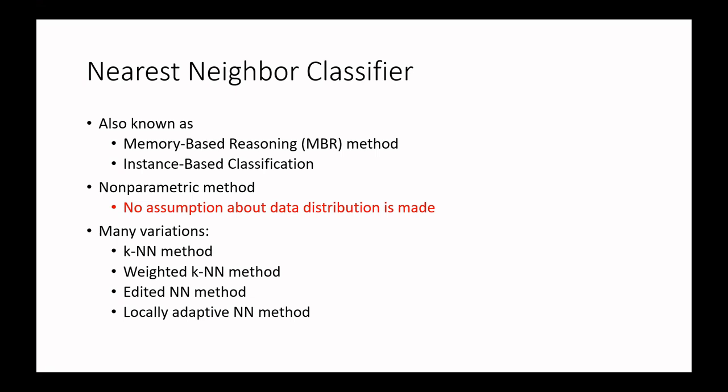There are many variations of this method. In general, it is called the KNN method where K is 1 — in that case it is called 1NN or simply nearest neighbor classifier. If K is 3, then it is called 3NN and so on. There are also variations known as weighted KNN, edited NN, and locally adaptive NN. So there is a basic NN classifier with a number of variations.